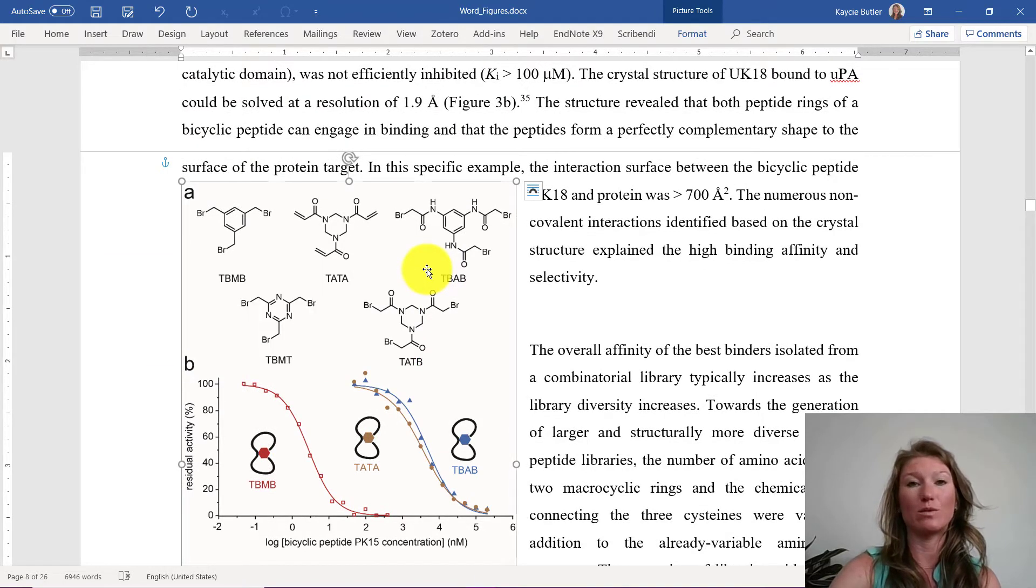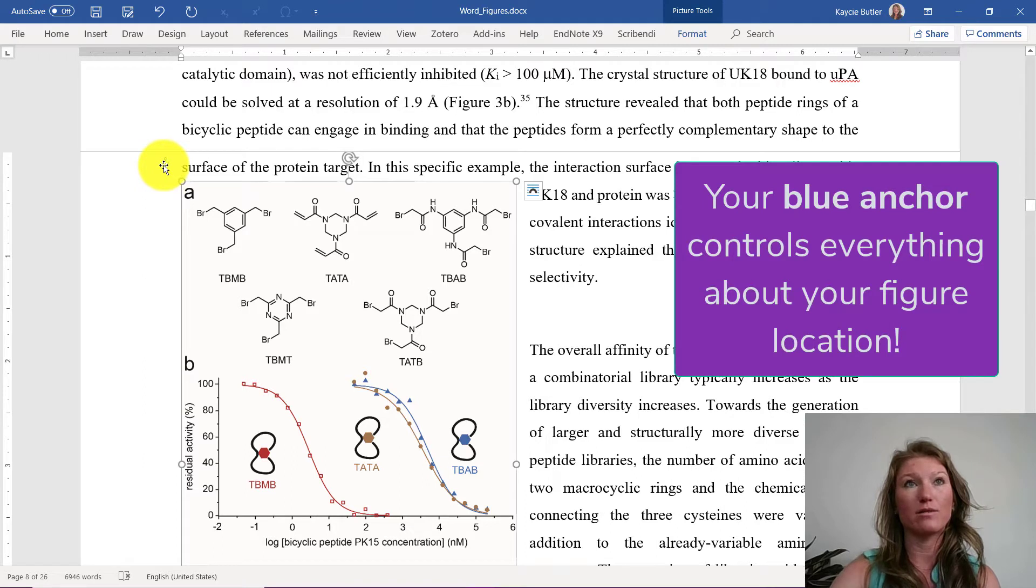Now, the next thing that I want to show you with this figure, and this is a really important key point of this figure, is when you have the figure selected, you see right here on the side of this text, there is this little blue anchor. This little blue anchor, if I hover my mouse over for you, is the object anchor. This anchor shows exactly which piece of text in this Word document your figure is stuck to or anchored to.